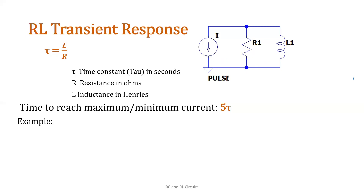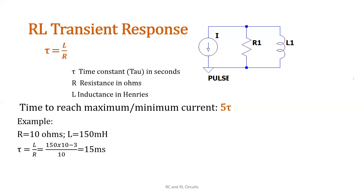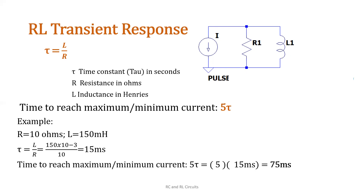Proceeding with the example: if we have a resistance of 10 ohms and an inductance of 150 mH, what is the time to reach maximum or minimum current? Let's solve for the time constant first. So 150 mH — 150 times 10 to the negative 3 — divided by 10 gives us 15 ms. The time to reach maximum or minimum current is 5 tau, so 5 times 15 ms equals 75 ms.